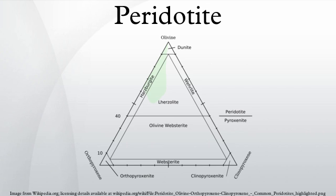Peridotite is the dominant rock of the upper part of the Earth's mantle. The compositions of peridotite nodules found in certain basalts and diamond pipes are of special interest, because they provide samples of the Earth's mantle brought up from depths ranging from about 30 km to 200 km.